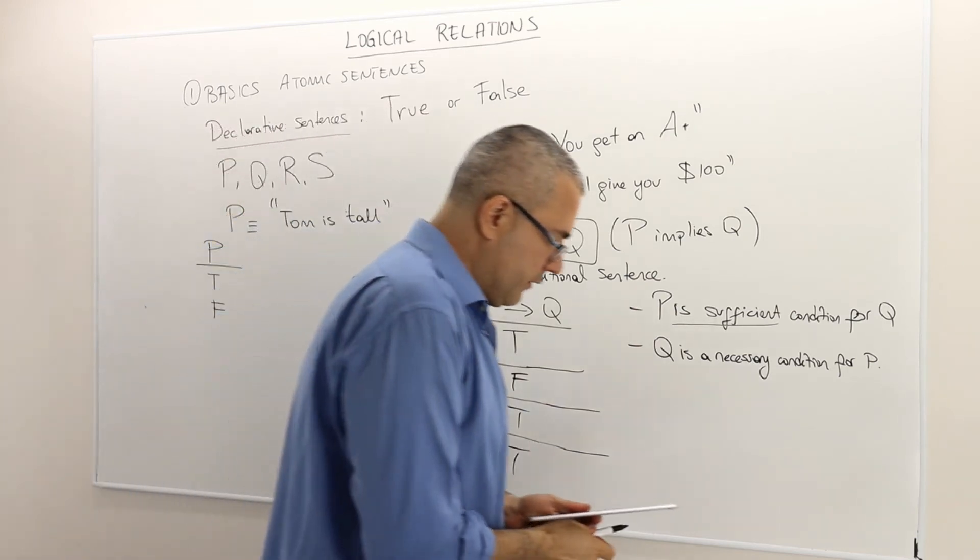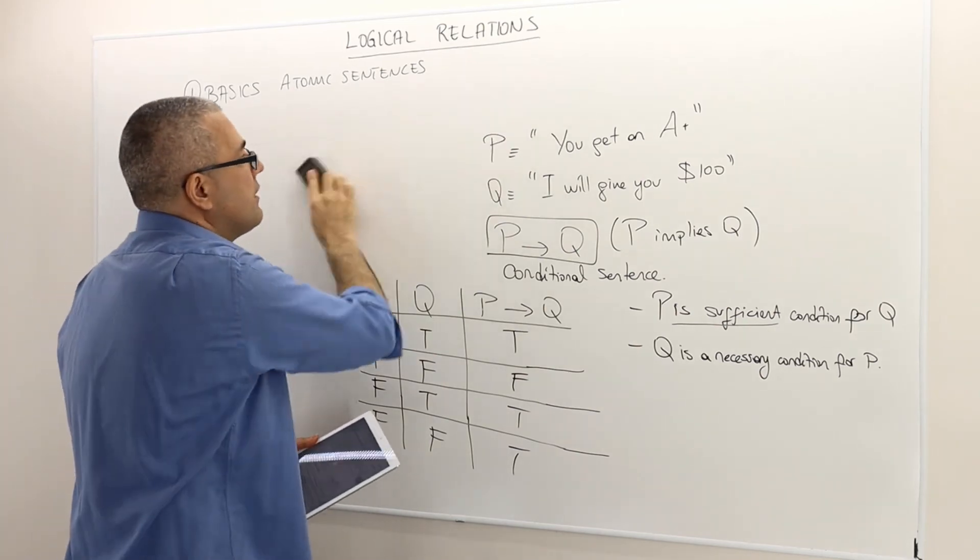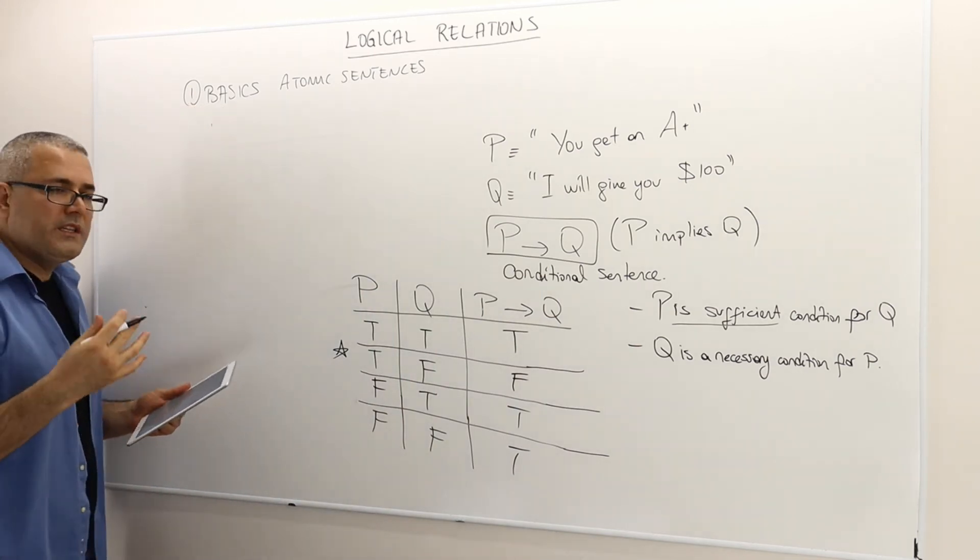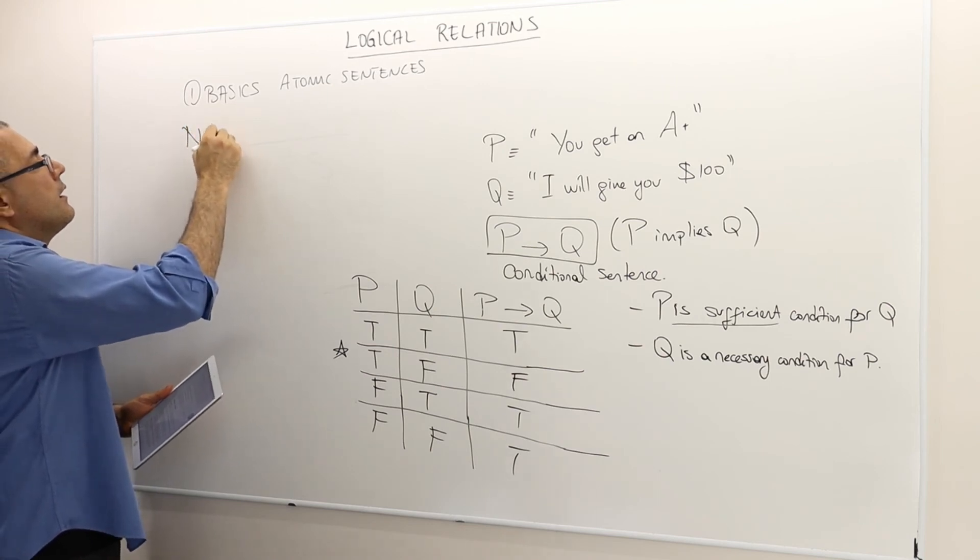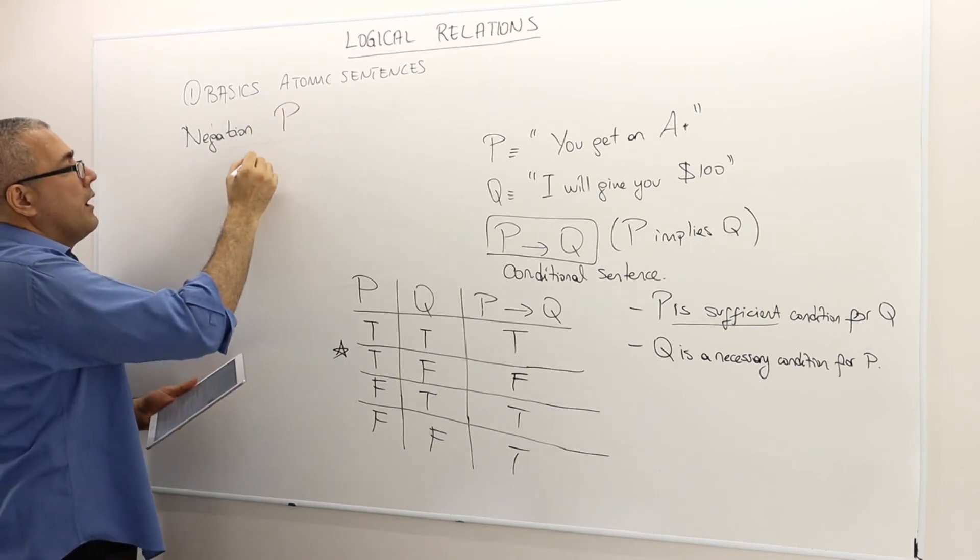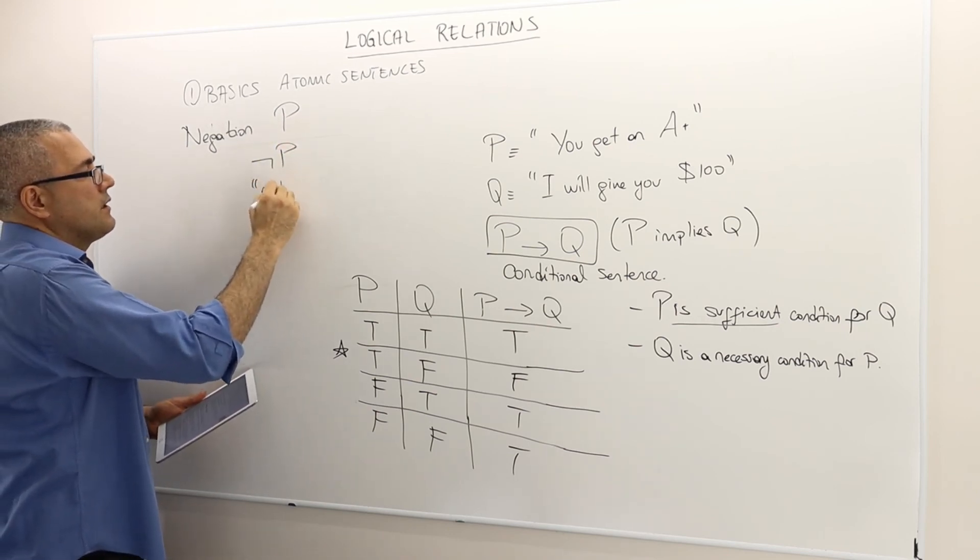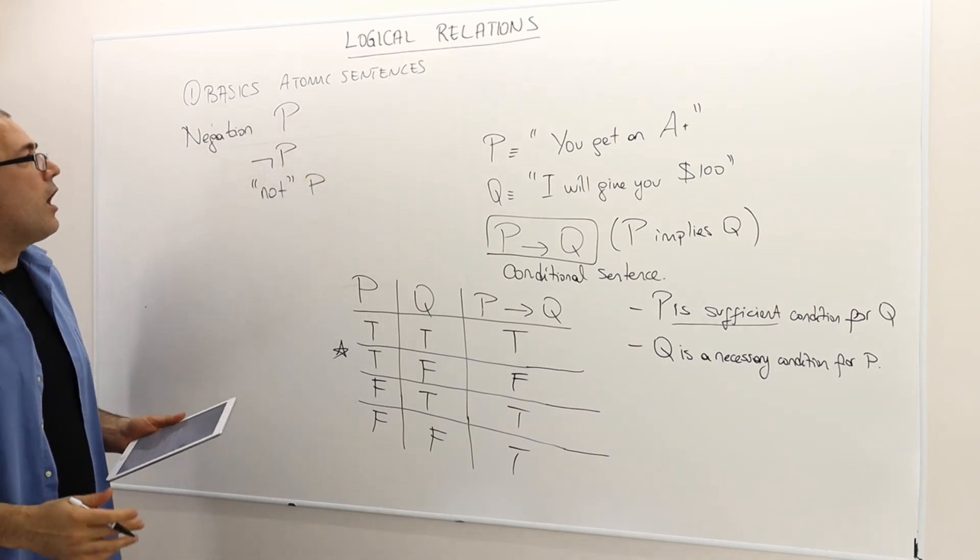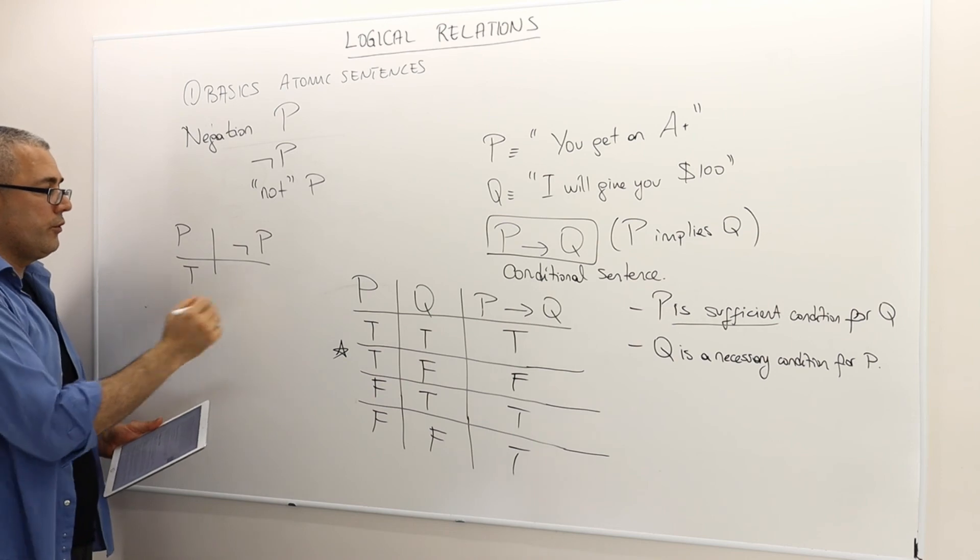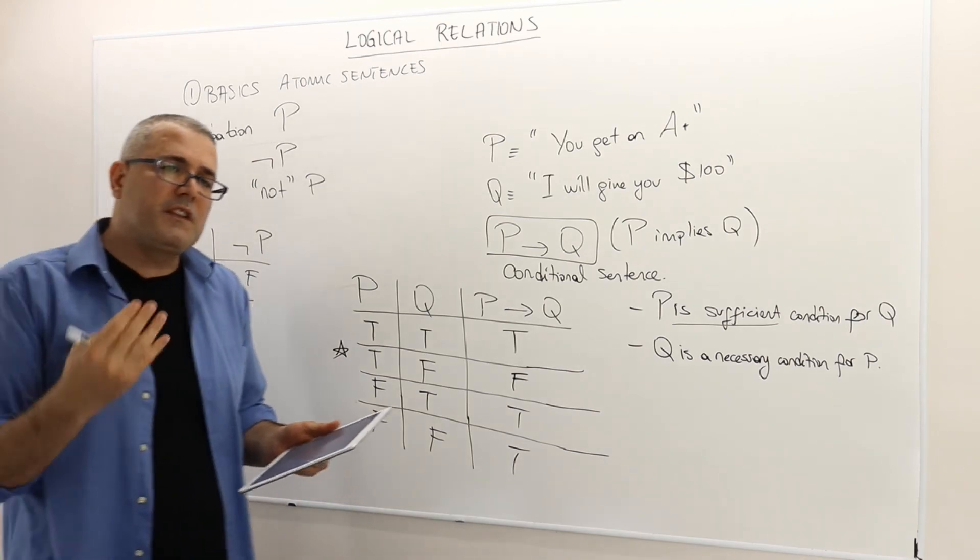One final ingredient that I would like to introduce is the negation. What if I want to say something like Tom is not tall? Well, you can say Tom is short, right? But how do we denote it? Negation of any sentence P is denoted by this symbol. It's written or read as not P. And obviously, if P is true, not P must be false. If P is false, not P must be true. So in terms of its meaning, it's the opposite.